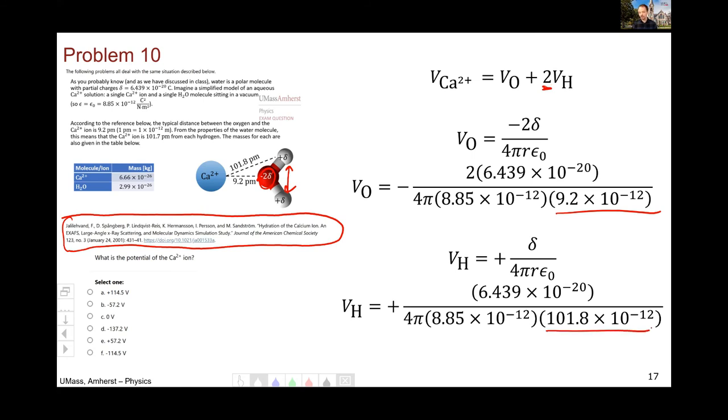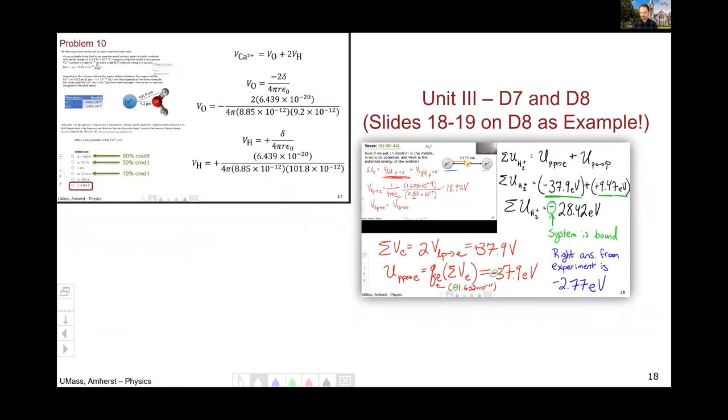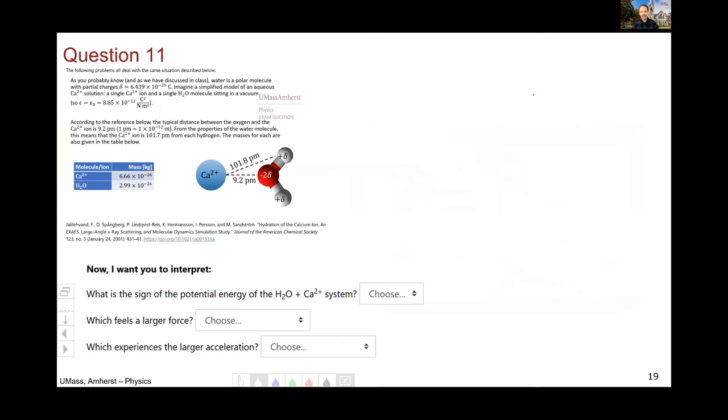In that case, the distance is 101.8 picometers. And when all is said and done, the correct answer that you get is minus 114.5 volts. I gave 50% partial credit for having the sign wrong. I gave 50% partial credit for basically if you missed both of these twos, you'll get minus 57.2, and that's worth half credit. And even this other answer is worth 10% credit because you recognize that this is going to be negative because this thing is going to be bound together. Unit three, day seven and eight, where you did quite a few problems like this. Here's one example with the super simple model for singly ionized molecular hydrogen.